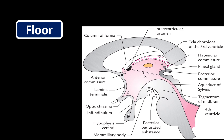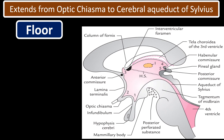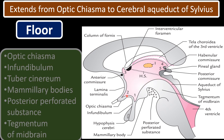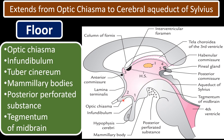The floor of the third ventricle extends from the optic chiasma to the cerebral aqueduct of Silvius. The structures seen on the floor are: optic chiasma, infundibulum (stalk of the pituitary gland), tuber cinereum, mammillary bodies, posterior perforated substance, and the tegmentum of the midbrain. These structures are better understood when looking at the brain from the inferior view.